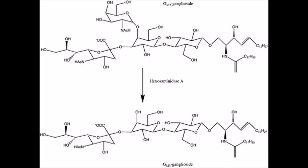The hexagene provides instructions for making one subunit of an enzyme called beta-hexosaminidase A. Beta-hexosaminidase A plays a critical role in the brain and spinal cord. This enzyme is found in lysosomes, which are the structures in cells that break down toxic substances and act as recycling centres. Within lysosomes, beta-hexosaminidase A forms part of a complex that breaks down a fatty substance called GM2 ganglioside. GM2 ganglioside builds up in cells of the brain and nerves and stops them from working normally, eventually destroying them.